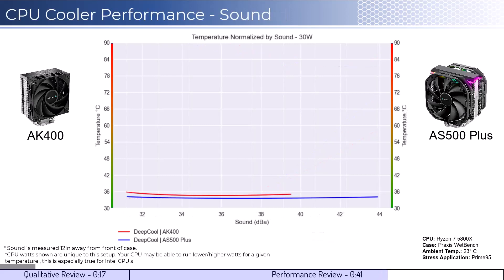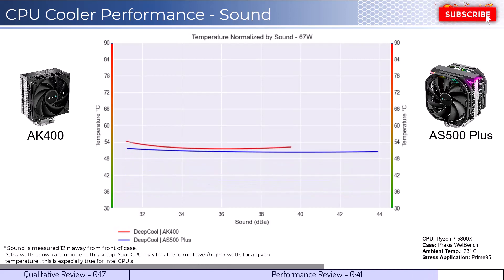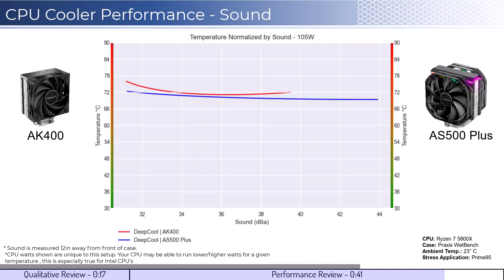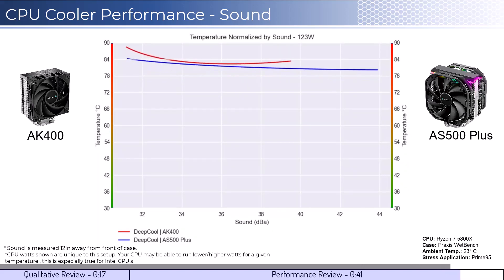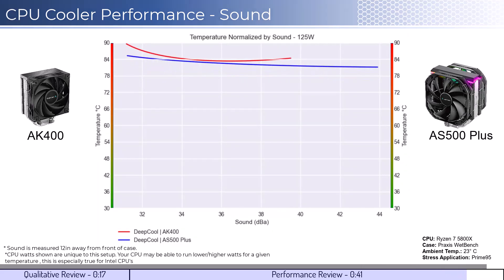For the second set of comparisons, we will look at the performance for a given noise level. The graph shown has noise on the bottom axis, while keeping the temperatures on the side axis. Note that lower is still better for this graph. When comparing coolers by normalized noise levels, we can see that both coolers perform similarly at idle CPU levels. As we increase the watts to 105, we can see the AS500 Plus begin to outperform across comparable noise levels, and as we increase the watts to 125, we can see that this trend continues.